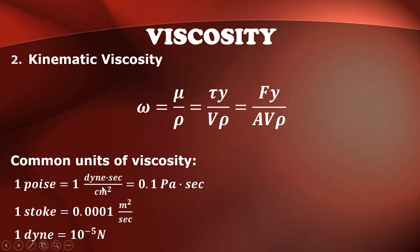The common unit of viscosity is the poise. One poise is equivalent to one dyne-second per centimeter squared, or equal to 0.1 pascal-second. This is usually the unit of absolute or dynamic viscosity. The unit of kinematic viscosity is the stoke, which equals 0.0001 meters squared per second. Also, one dyne equals 10 to the negative 5 newtons.